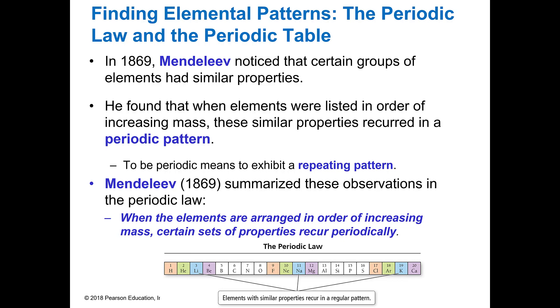And so he summarized these observations in this periodic law. And the periodic law says that when elements are arranged in order of increasing mass or number, certain sets of properties occur periodically. Alright and so that's the actual law.